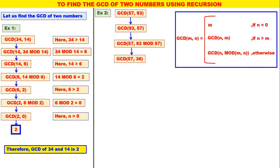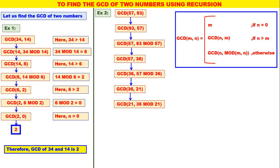In GCD of 57, 36, the second parameter is not equal to 0, and 57 is greater than 36. Therefore, this calls GCD of 36, 57 mod 36. What is 57 mod 36? 21. In GCD of 36, 21, the second parameter is not equal to 0, and 36 is greater than 21. Therefore, this calls GCD of 21, 36 mod 21. What is 36 mod 21? 15. In GCD of 21, 15, the second parameter is not equal to 0, and 21 is greater than 15. Therefore, this calls GCD of 15, 21 mod 15. What is 21 mod 15? 6.